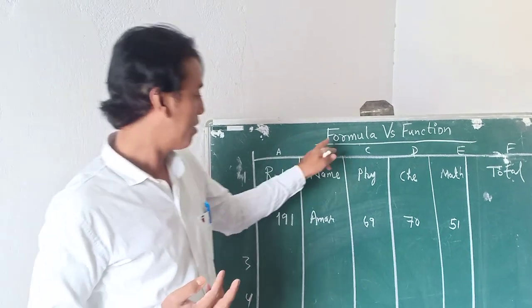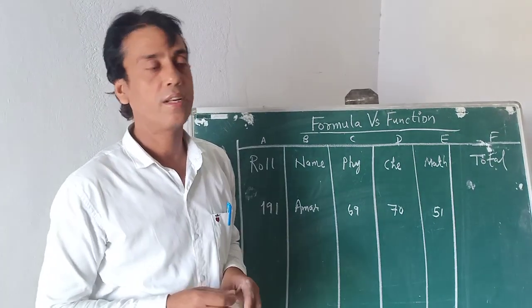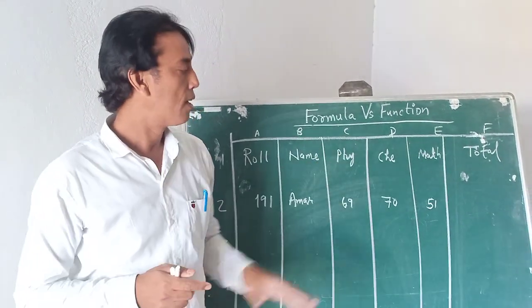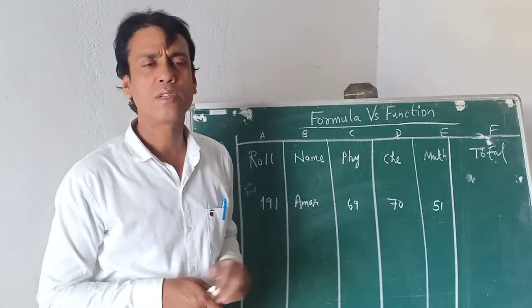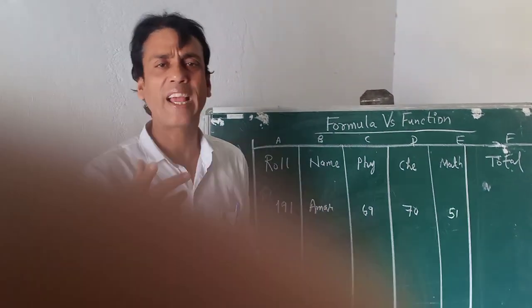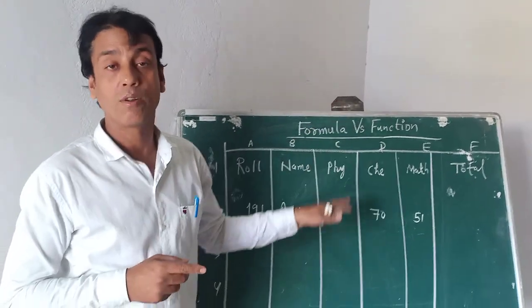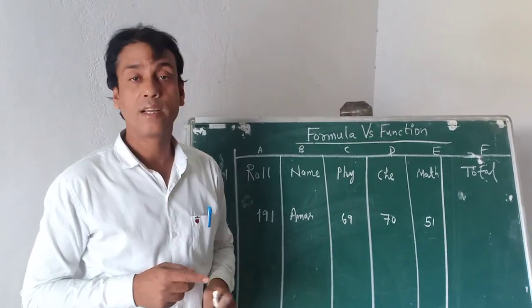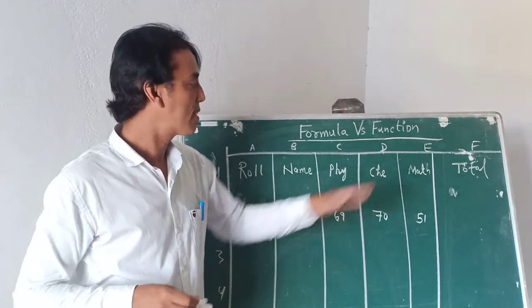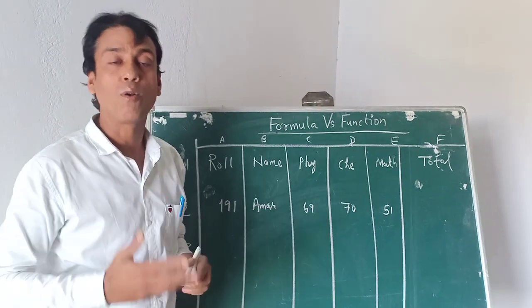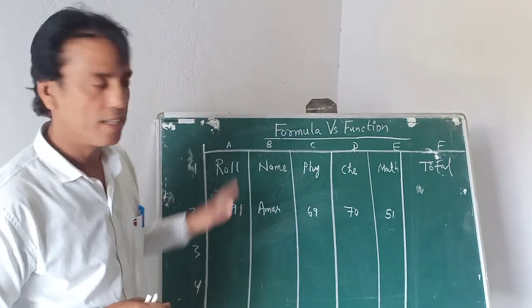We can understand the difference with one example. So far as the definition is concerned, formula is used by the user to calculate mathematical calculations, especially for small calculations. The formulas are designed by the user only, whereas the function is ready-made. The function is predefined, pre-designed. It has syntax and is used for small to large purposes.